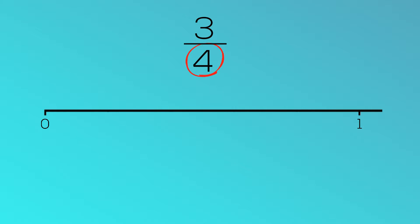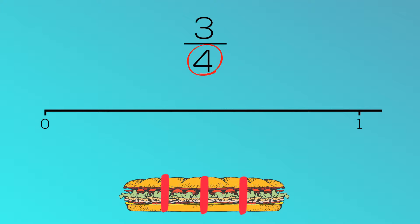Looking at the denominator, we can see that the whole has been split into four equal parts. Just like the sandwich, we need to split the whole represented on this number line into four equal parts.